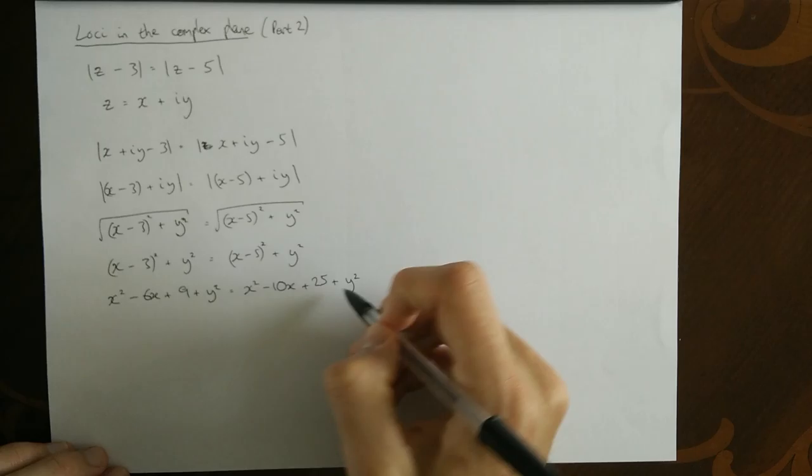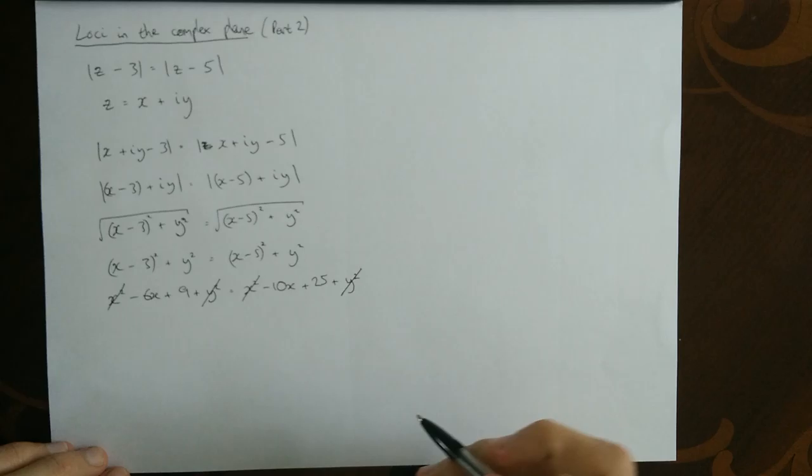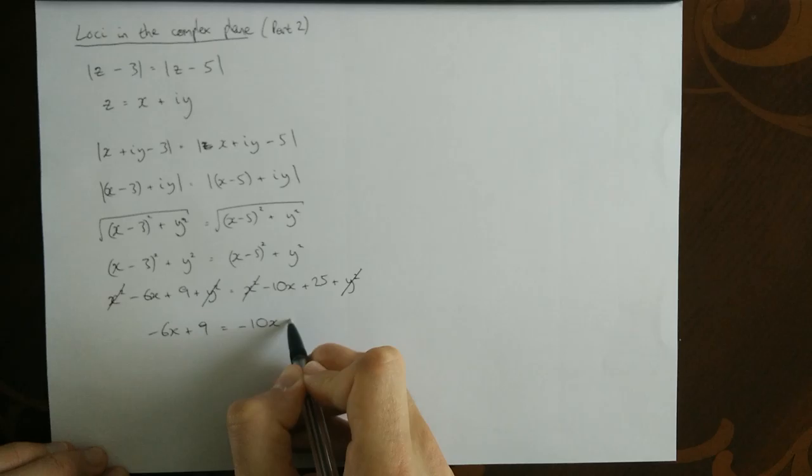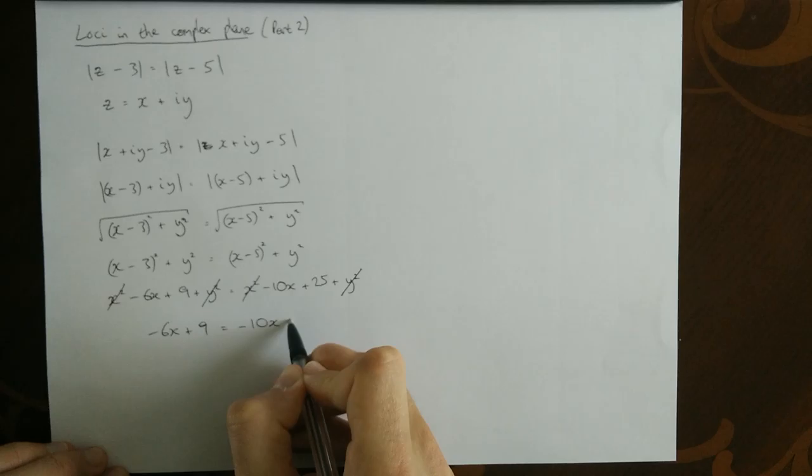Now we can cancel. There's a y squared here and a y squared here. And there's an x squared here and x squared here. All I'm doing is going to simplify this now into some standard form that we're used to seeing so we can interpret what it looks like as an equation. Keep going because we can move these 10x's to this side.